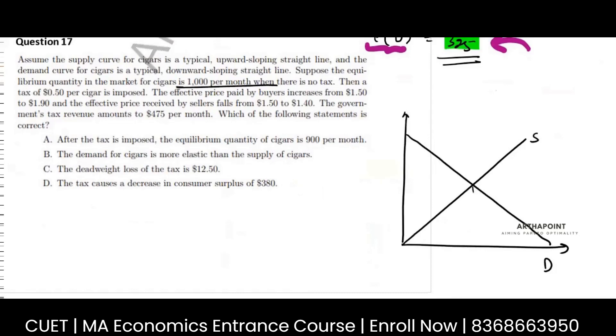This is your demand curve. The initial equilibrium quantity is a thousand. Then a tax of 0.50 is imposed. The effective price paid by the buyer is increased from 1.50 to 1.90, so initially the equilibrium was 1.50. Now the buyer is paying 1.90 and the seller is receiving 1.40.